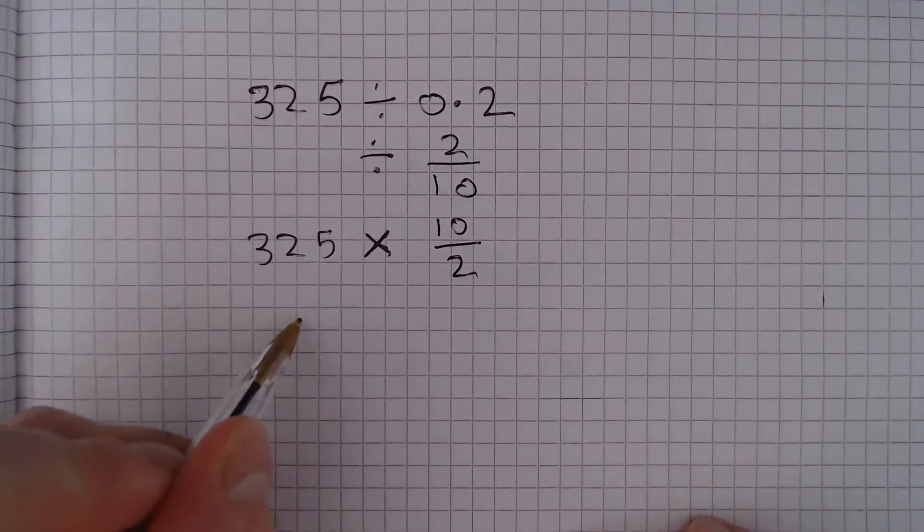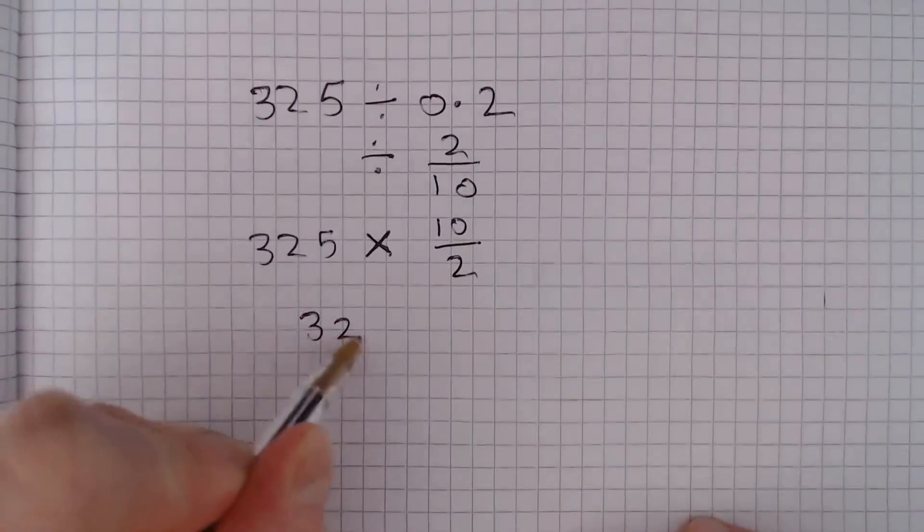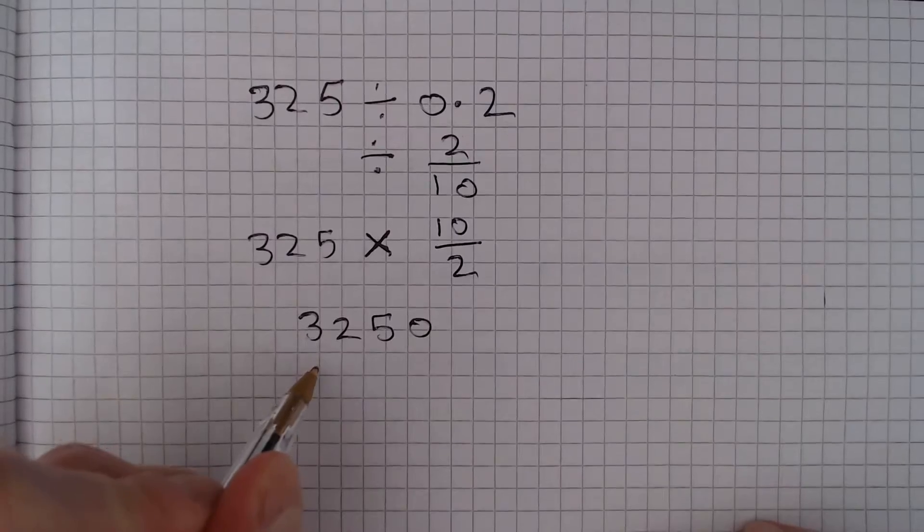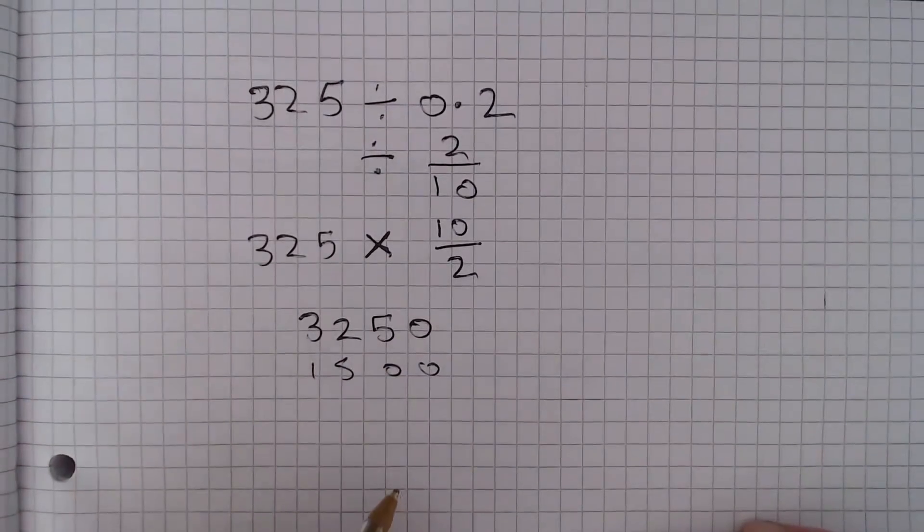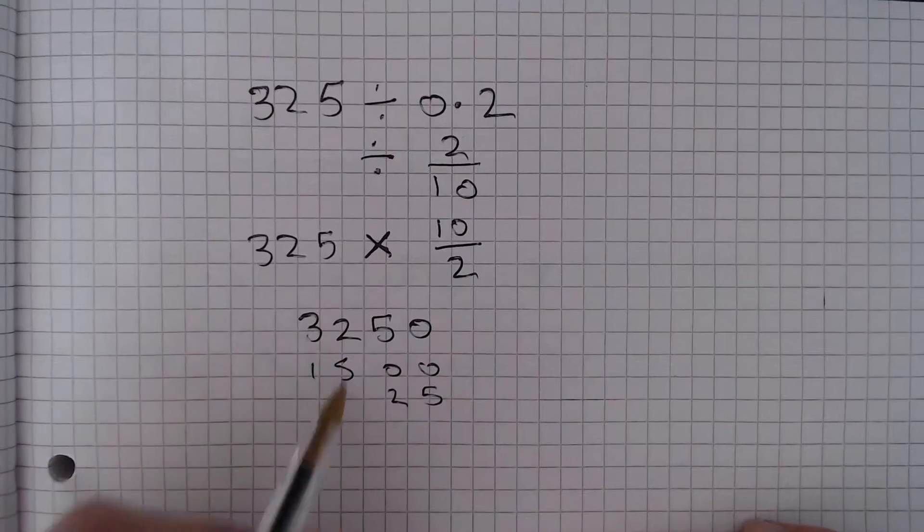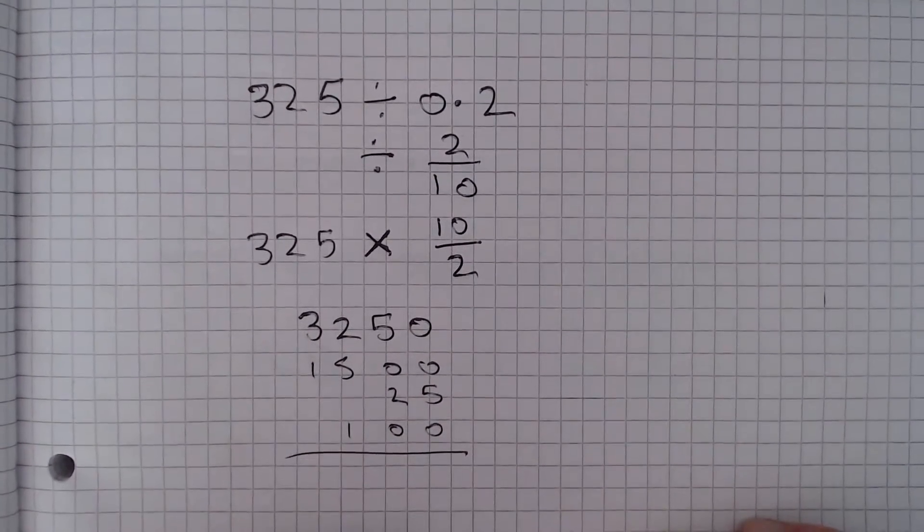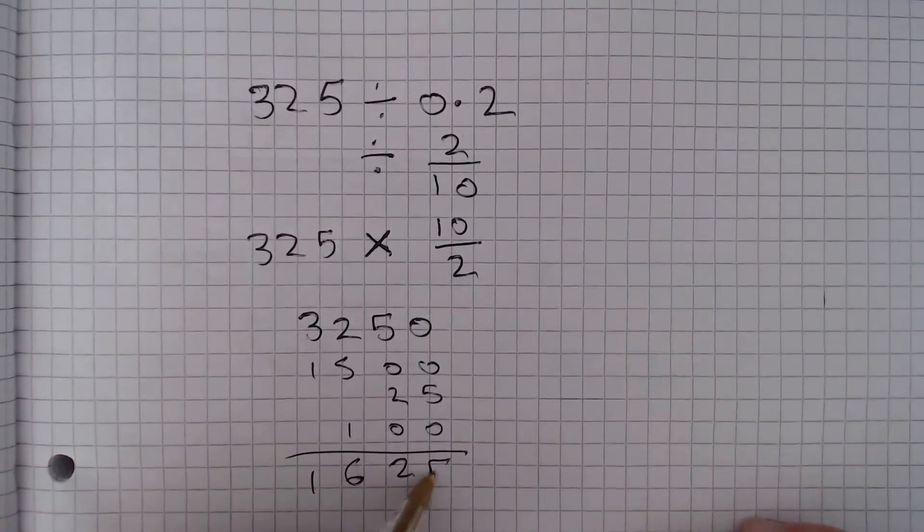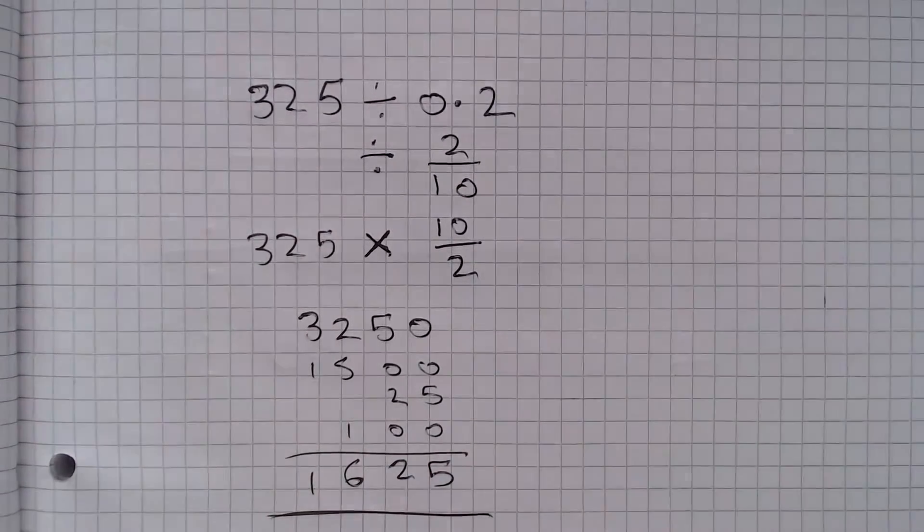Well, 325 multiplied by 10 gives me 3250. And if we divide that by 2, the 3000 is going to give us 1500, the 50 is going to give us 25, and the 200 is going to give us 100. So when we add this all together we get 1625, and that is the answer.